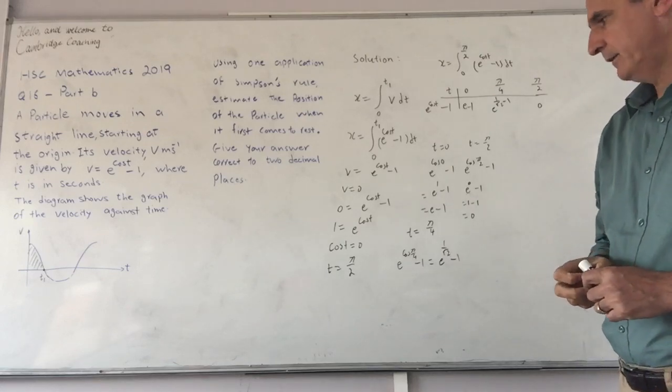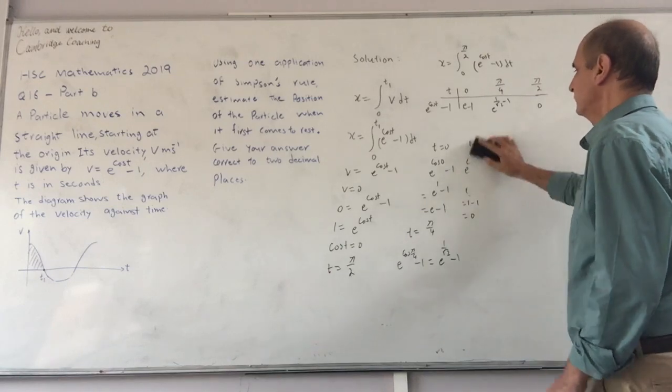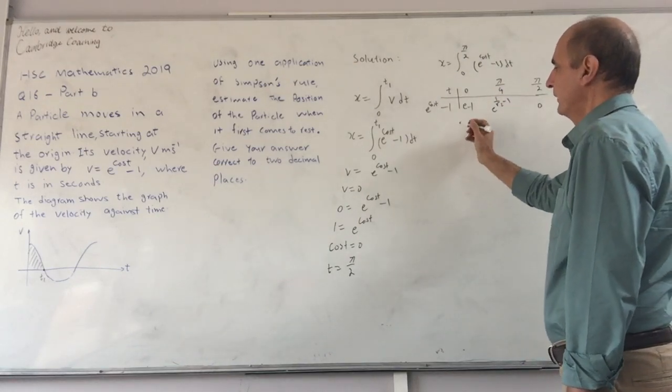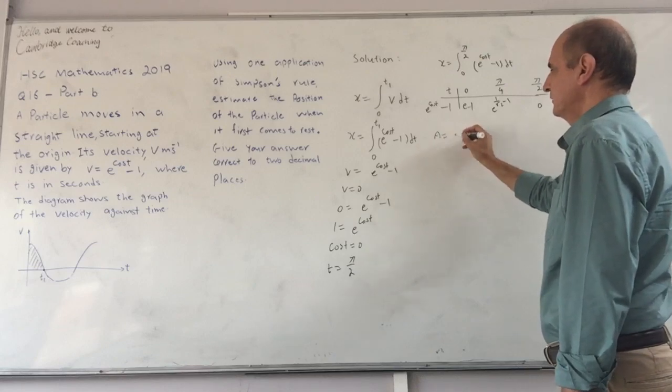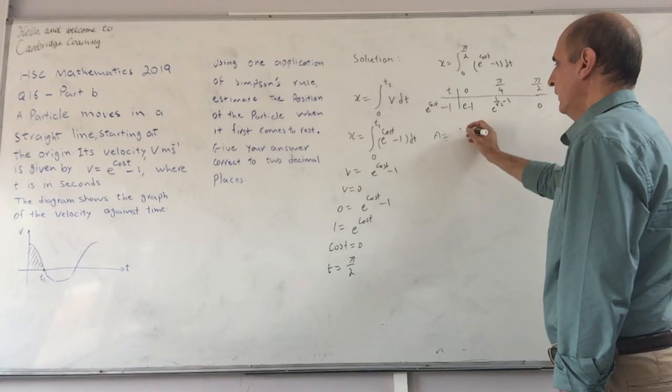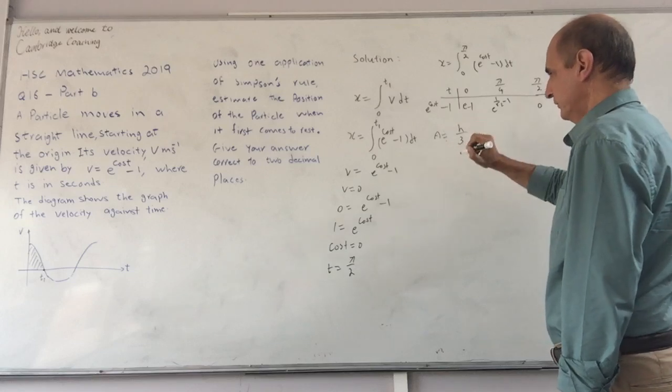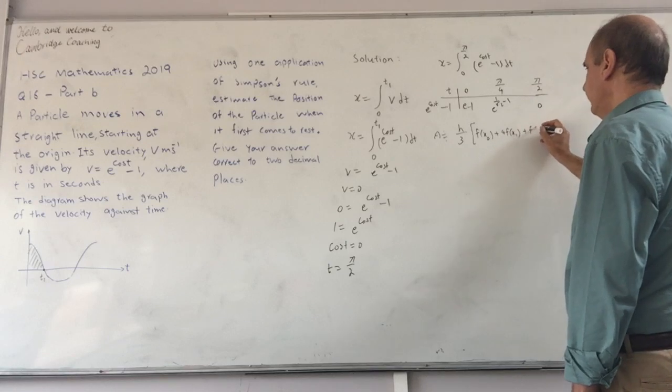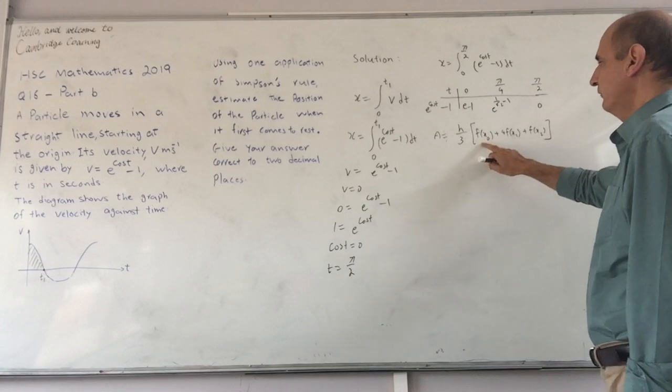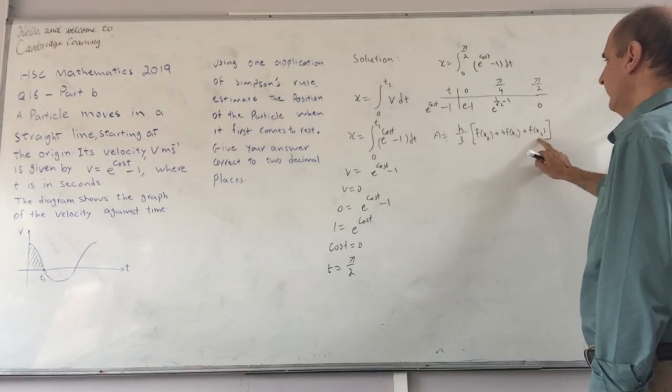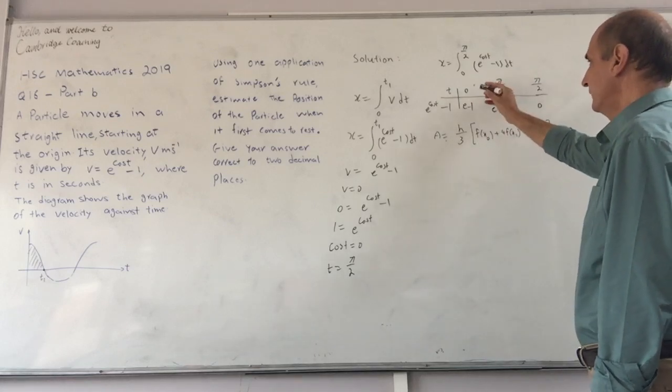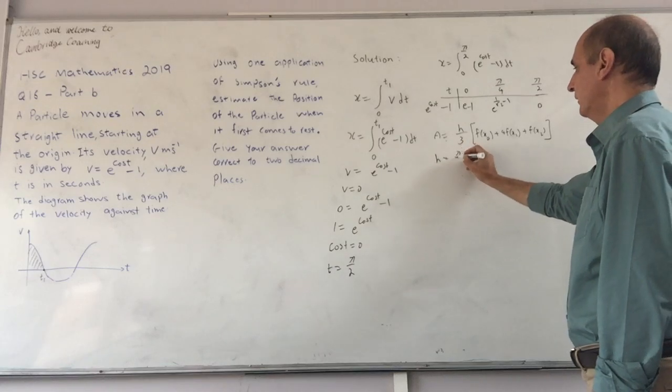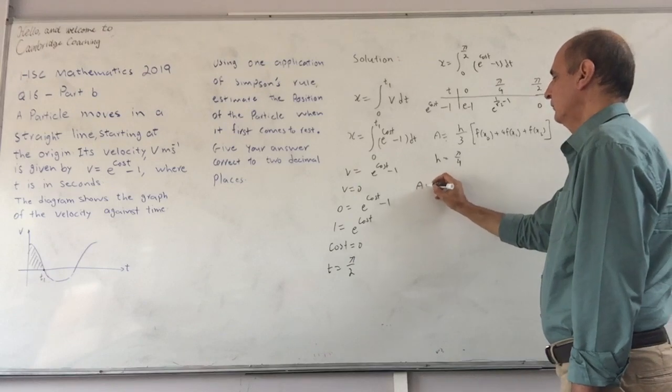Now we have all these values, we can use Simpson's rule to work out this integral. Simpson's rule tells us the area is approximately equal to h/3 times f(x0) plus 4 times f(x1) plus f(x2). This is the initial value of the function, this is the middle one, and this is the last one. h is the difference between the t values, which is π/4.